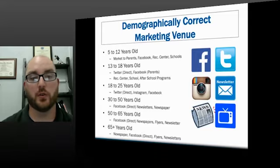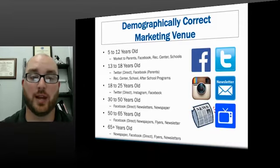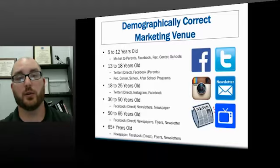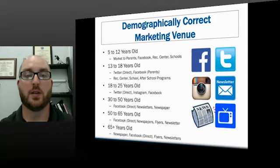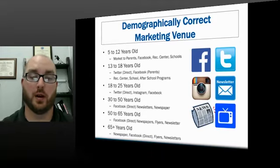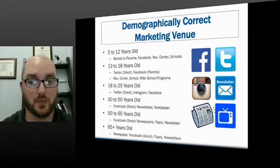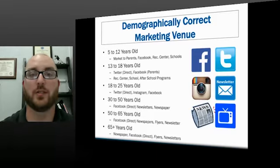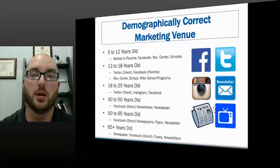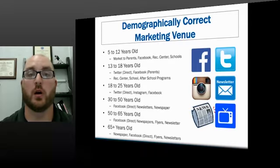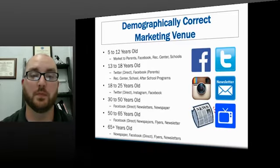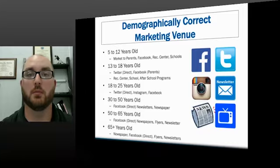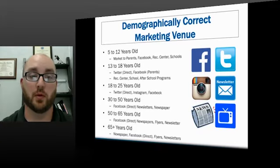For 5 to 12 year olds, typically the marketing is indirect — it's towards the parents. You're not putting up social media posts for a 4 or 5 year old; you're sending it to their parents. Typically the parents are on Facebook and they're going to find that content through rec centers, schools, or going online. If that's the demographic you're pursuing, Facebook marketing directed towards the parents is going to be the most efficient.